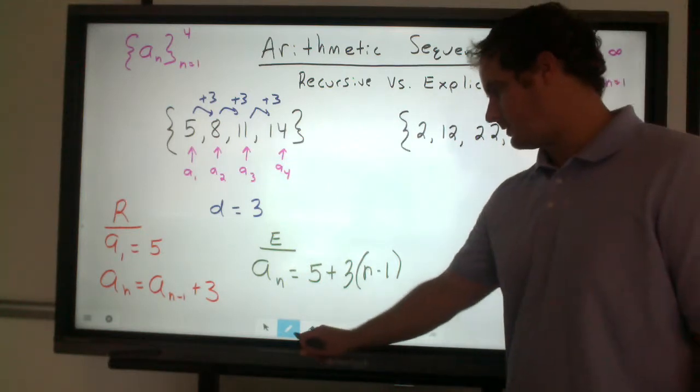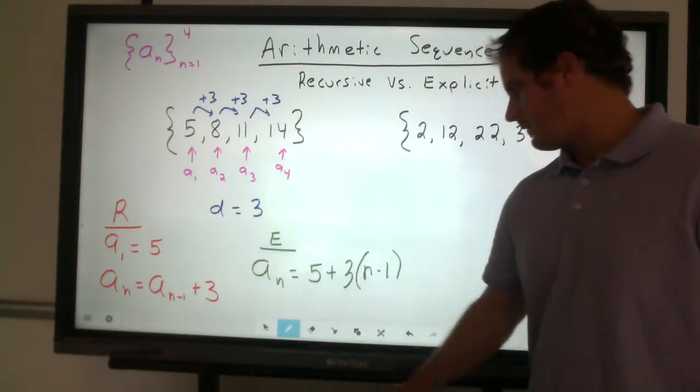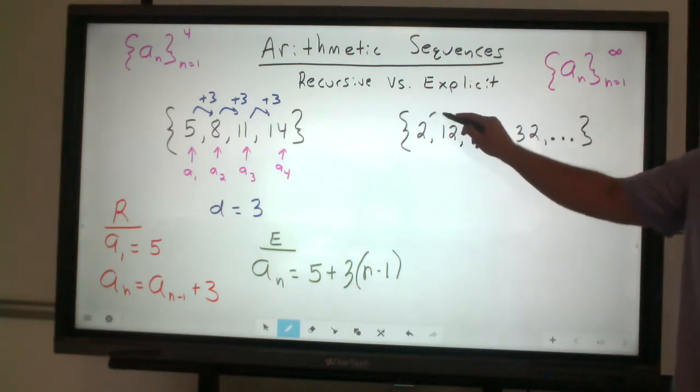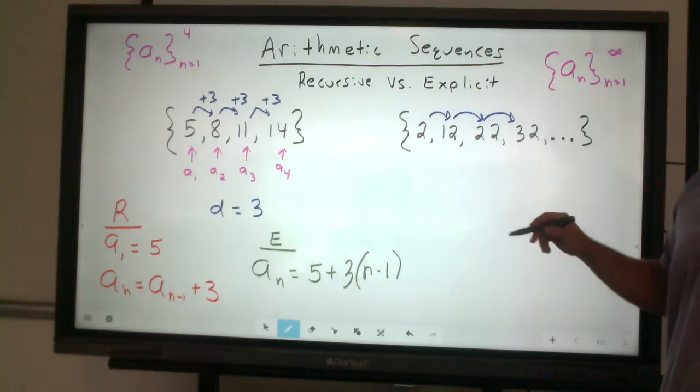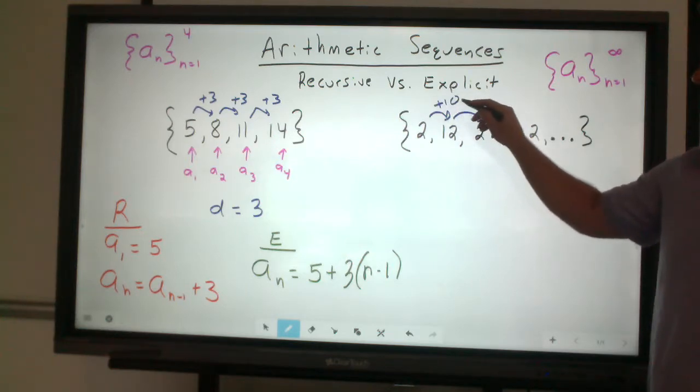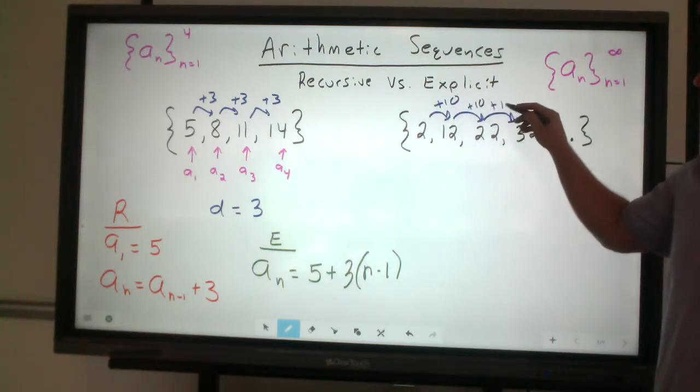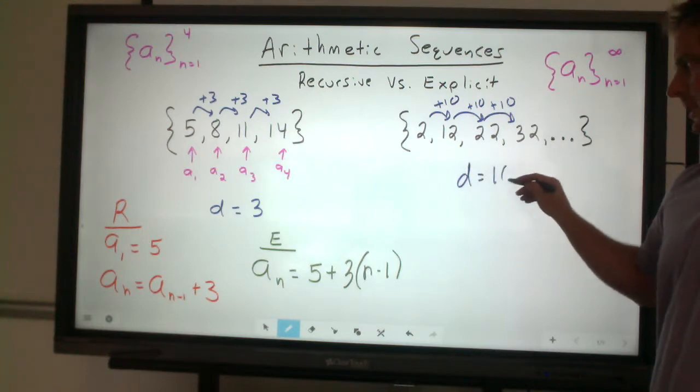All right, let's look at the next example. The next example, we'll notice that we go from 2 to 12 to 22 to 32, and so on and so forth. This pattern, we're actually adding by 10. So this common difference is going to be 10.